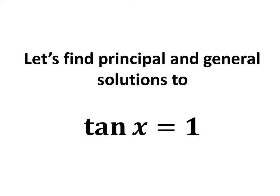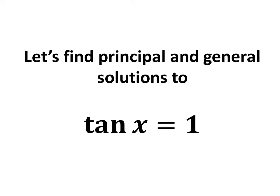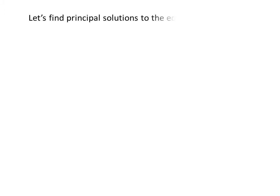In this video, we will learn to find the principal and general solutions to the equation tangent of x is equal to 1. Let us first find the principal solutions. We know the solutions to the trigonometric equation for which x is greater than or equal to 0 and less than 2 times pi are the principal solutions.